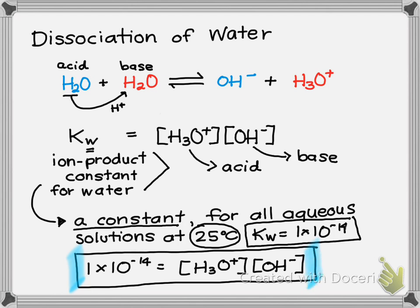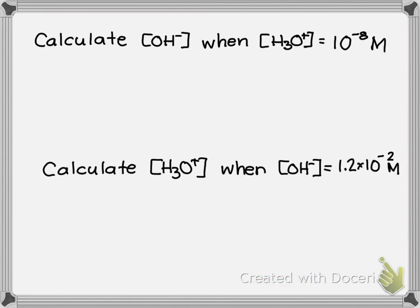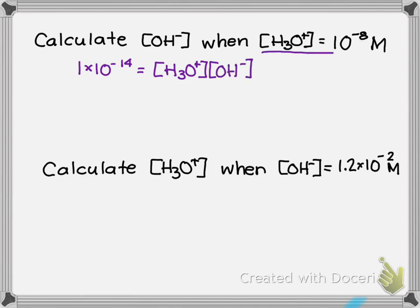You don't have to memorize the Kw equation — it will be given. Let's see how it helps us determine relative acid and base concentrations. Problem 1: calculate the hydroxide ion concentration when the hydronium ion concentration is 1×10⁻⁸. We'll be working at 25°C. We know that 1×10⁻¹⁴ equals the acid concentration times the base concentration, and from the problem we were given the acid concentration.